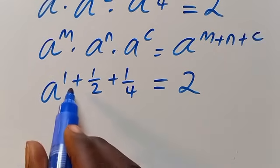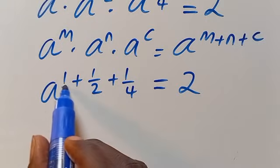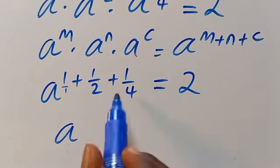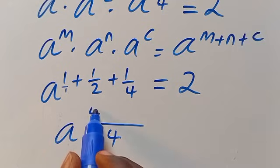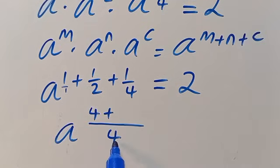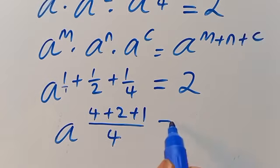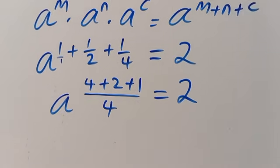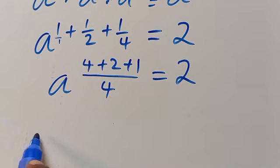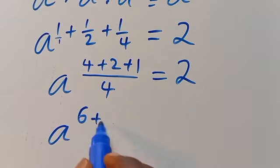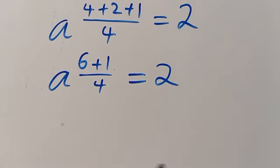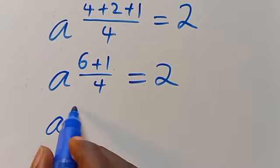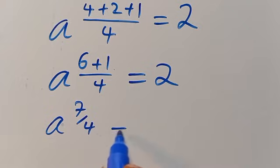We have A to the power of — finding a common denominator of 4 — 4 divided by 4 plus 2 divided by 4 plus 1 divided by 4, equals 2. So from here we have A to the power of 6 plus 1, all divided by 4, equals 2. Then A to the power of 7 divided by 4, equals 2.